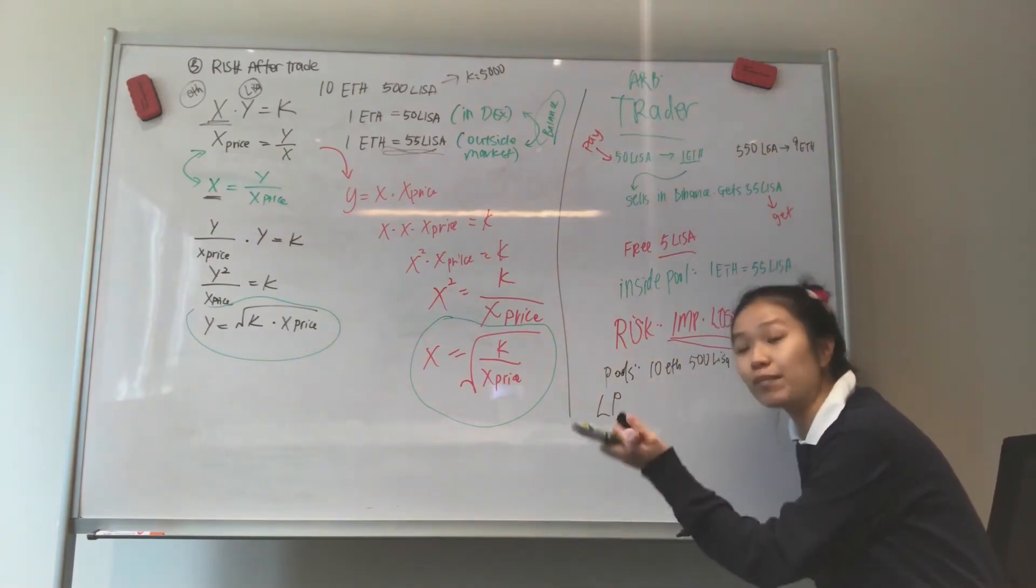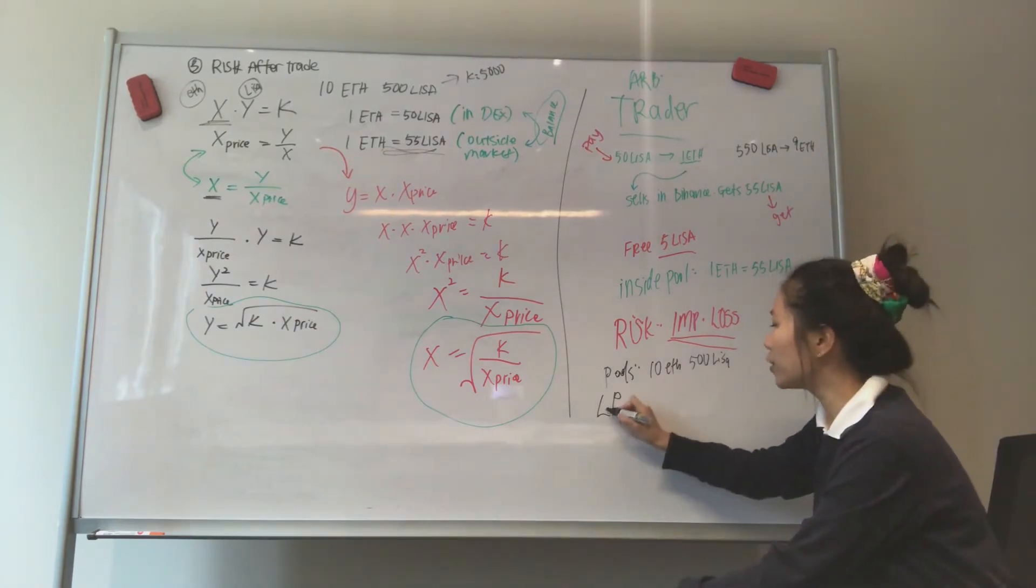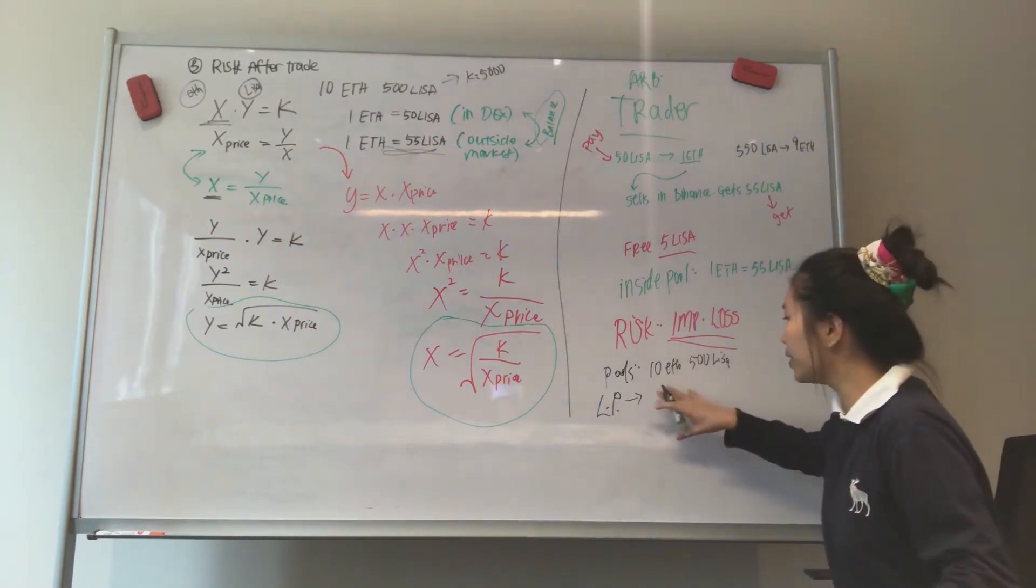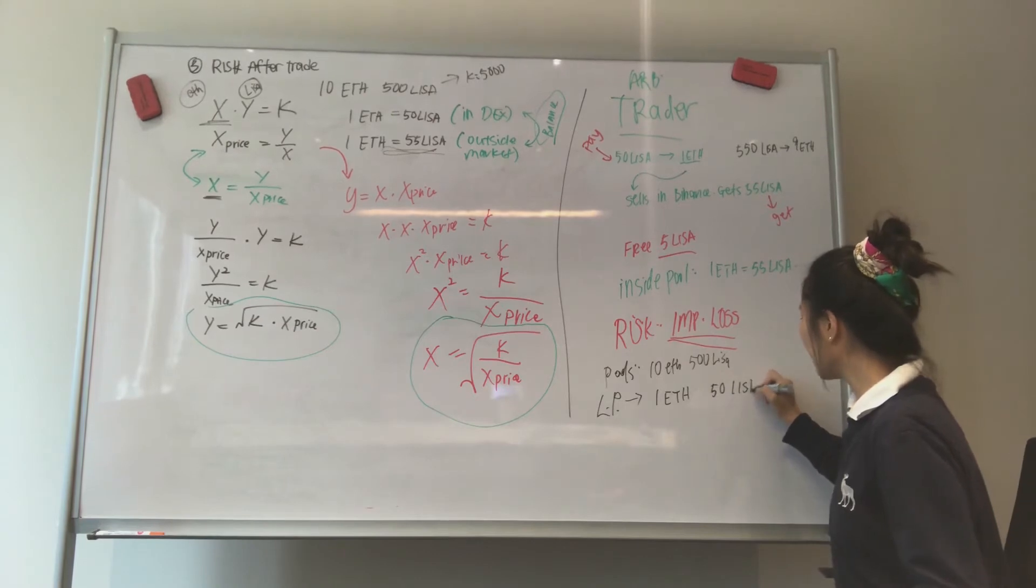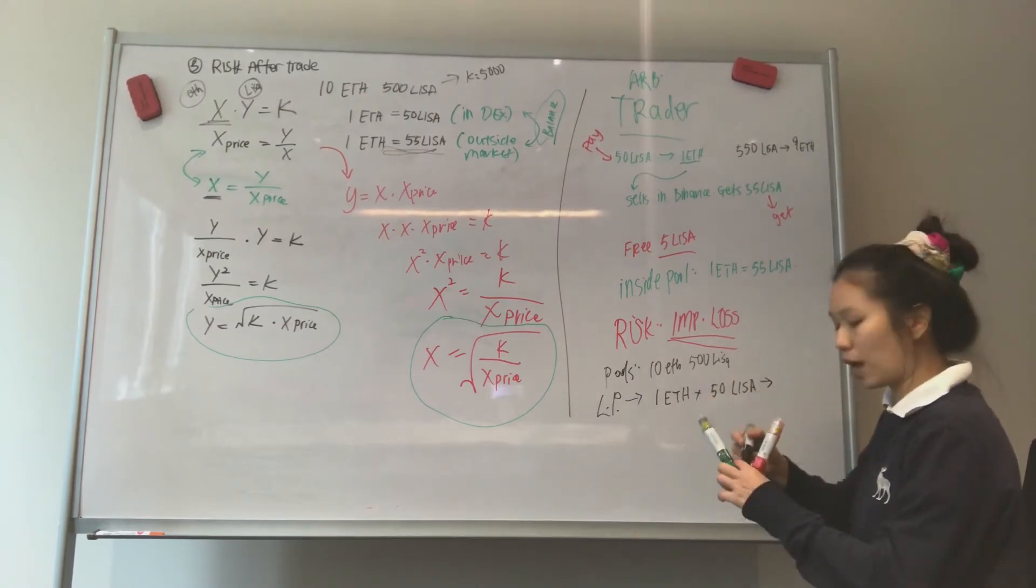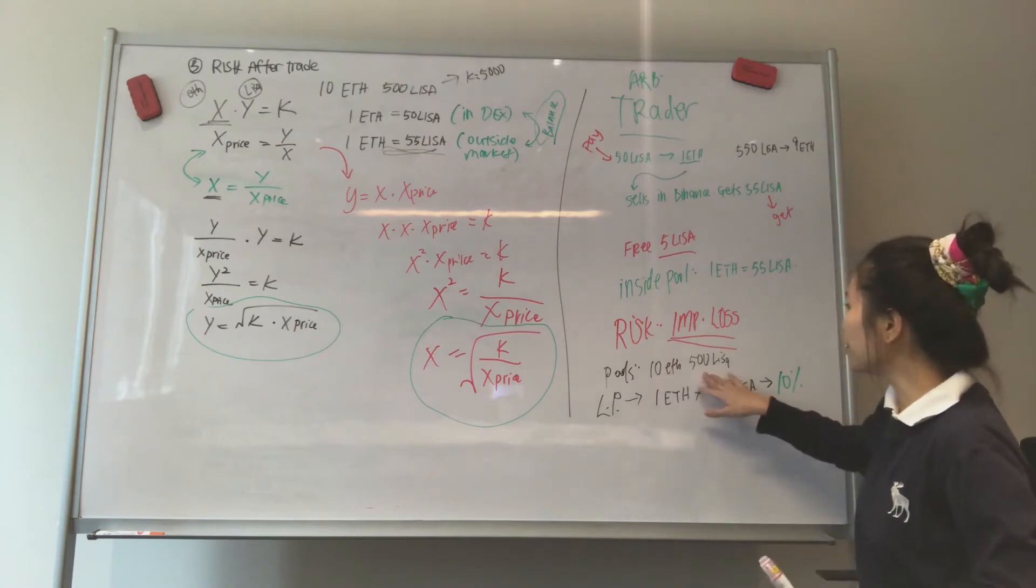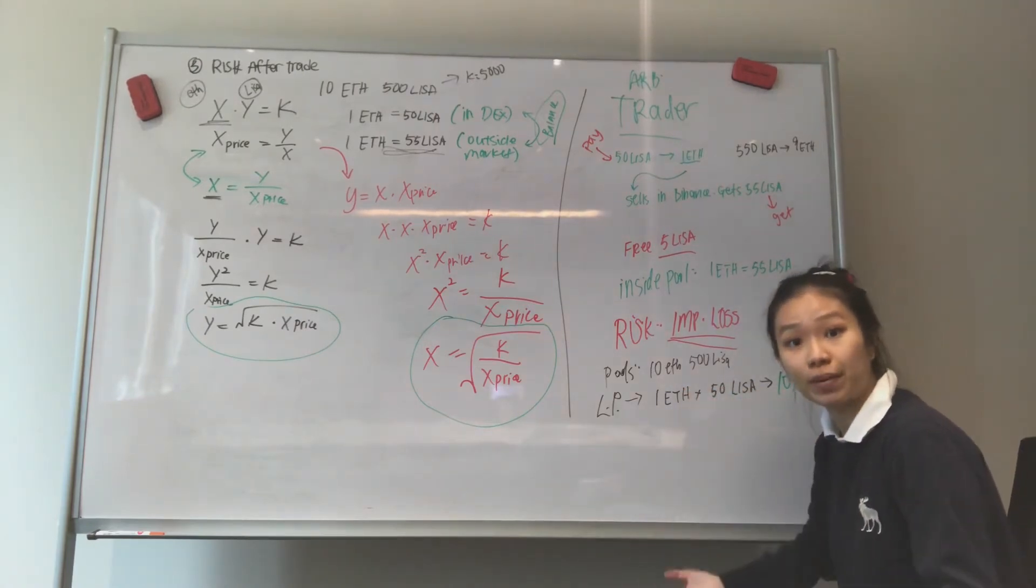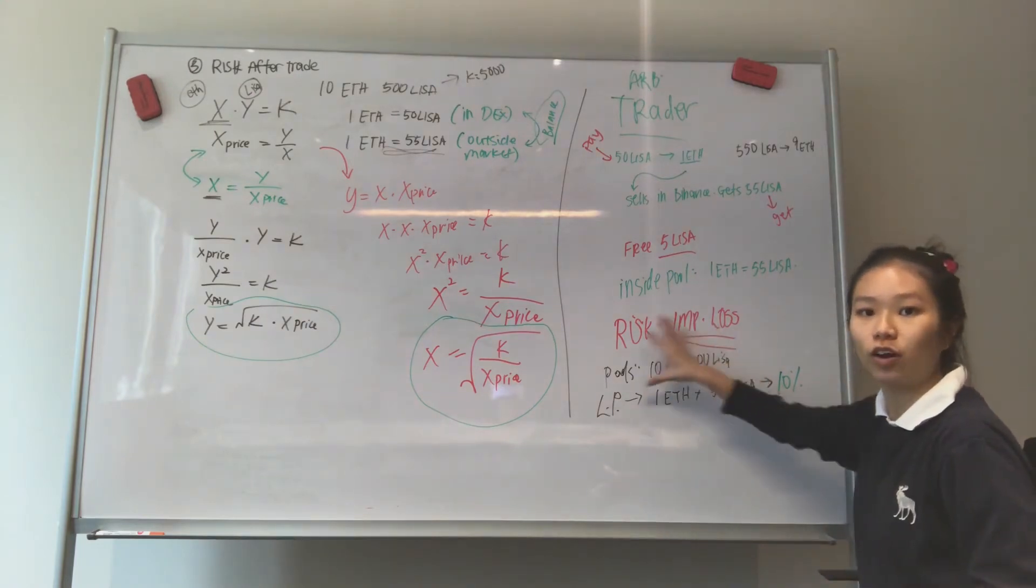You think these 10 ETH and 500 LISA just came out of thin air? They have to be added in by someone. And so these people are called liquidity providers. They provide liquidity to the pools. And when they provide liquidity into these pools, they also get ownership of this pool. So let's say I provide 1 ETH and 50 LISA. So that means I own 10% of this pool. Whatever this pool is worth, I own 10% of it. And also for all transaction fees, I keep 10% of the transaction fees. That means if I want to liquidate my position, I am worthy of 10% of whatever is in the pool value.